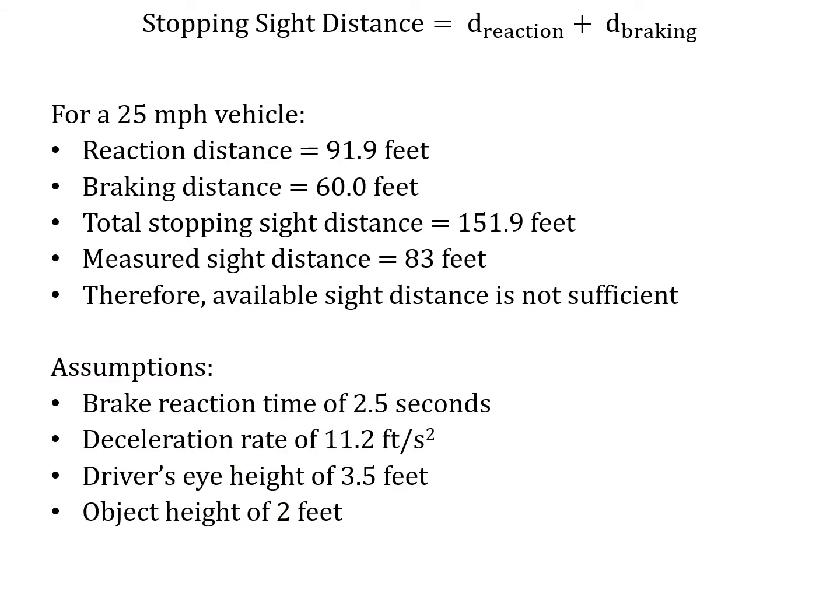Stopping sight distance has two components: a reaction distance and a braking distance. For a 25 mph vehicle, we assume a brake reaction time of two and a half seconds — the time for the driver to recognize a hazard and decide to stop. Braking distance is based on a deceleration rate of 11.2 feet per second squared. The reaction distance is 91.9 feet and the braking distance is 60 feet, giving a total stopping sight distance of 151.9 feet. We measured 83 feet, so the available sight distance is not sufficient.